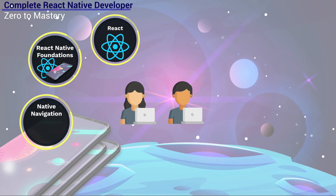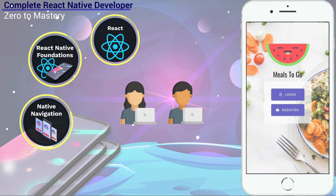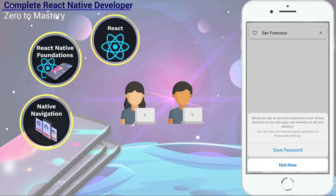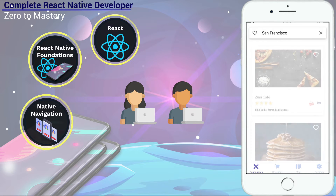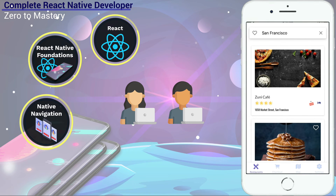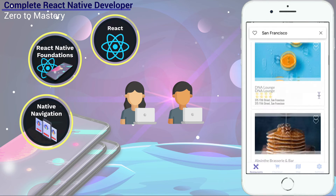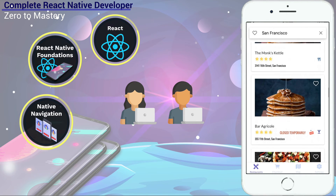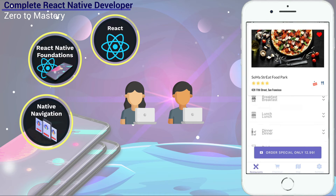So we dive into our master project. This course is all about learning by doing. Once we have the basics, we're going to start building our restaurant recommendation app called Meals to Go. You've already seen in the promo video what the app looks like — it looks really, really good — and we have a lot of features that we're going to add. As we learn about React Native, we're going to build up this massive app that you'll be able to show off.